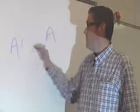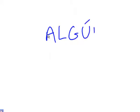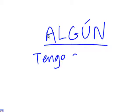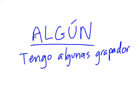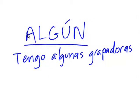Okay, let's get into today's lesson. Our first word today is algún. Algún is closest to the English some or any. For example: Tengo algunas grapadoras — I have some staplers.